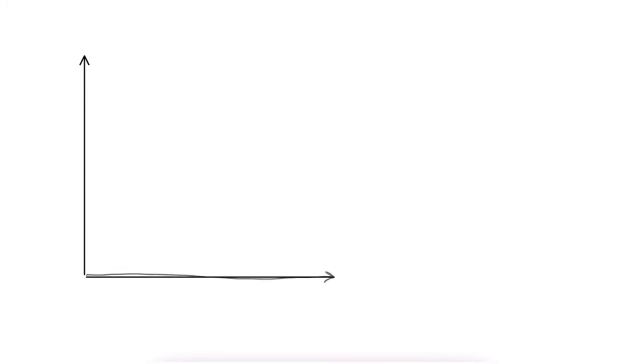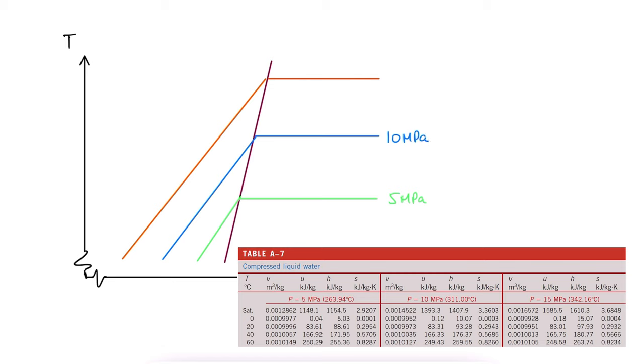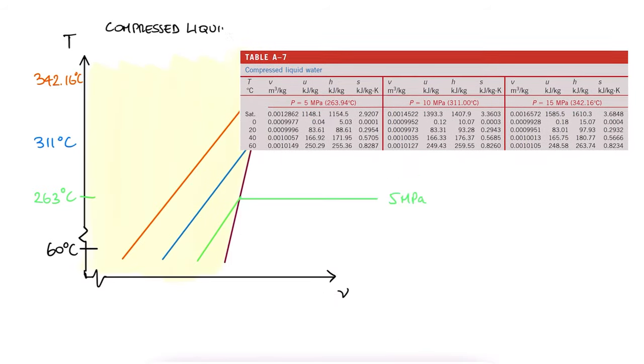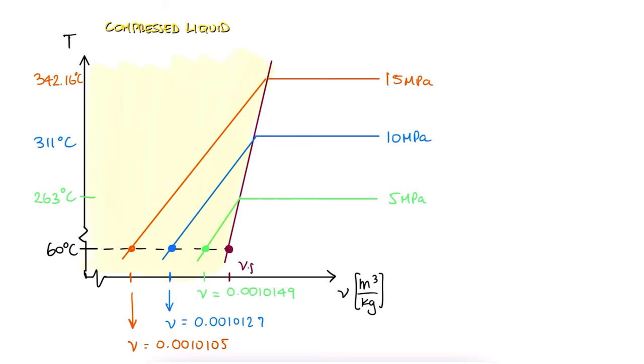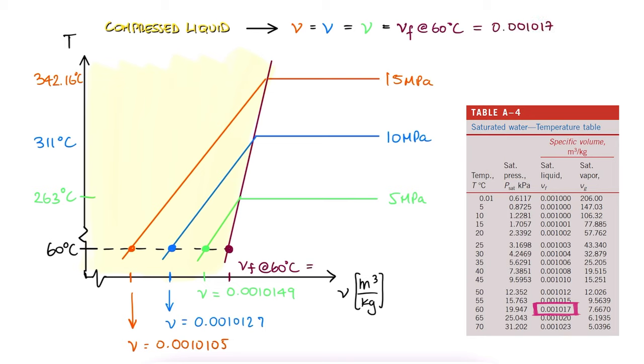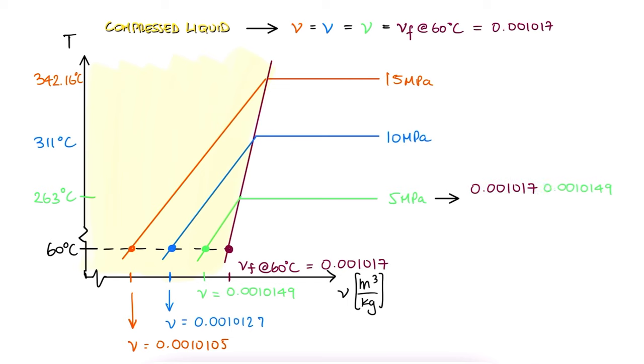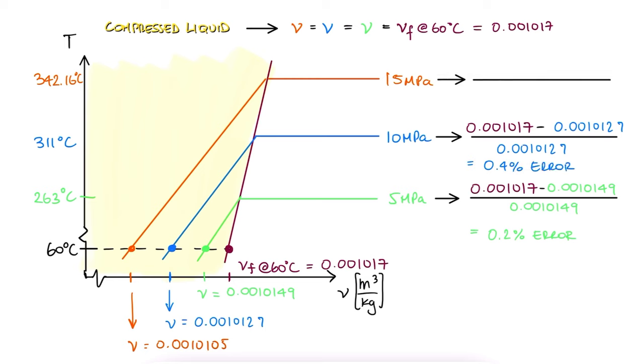We can see this very easily if we take note of some of the values for specific volume of water in its compressed state for, let's say, 5, 10, and 15 MPa and a temperature of 60 degrees Celsius. Now, this is just an example, and the values and axes are clearly not to scale, but it paints a clear picture for any temperature and pressure combination that is in the compressed liquid region. If we look this up in our tables, we can write down the specific volume values for each pressure line. What we're saying here by assuming that Vf is the specific volume for water at 60 degrees Celsius, regardless of its pressure, is that the specific volume is 0.001017. This means an error of 0.2% for 5 MPa, 0.4% for 10 MPa, and 0.6% for 15 MPa.